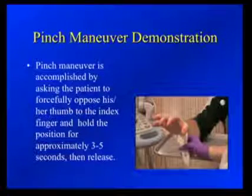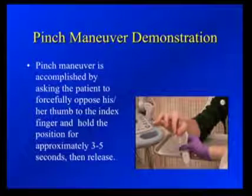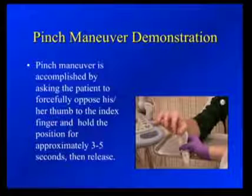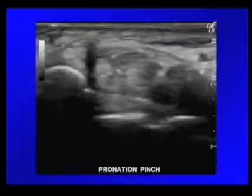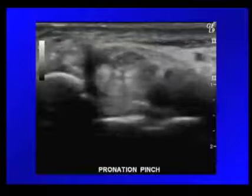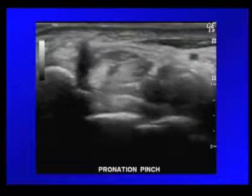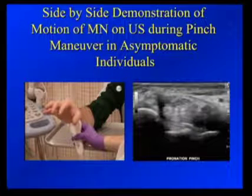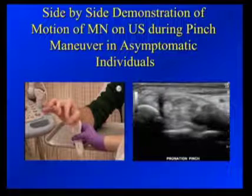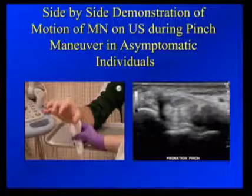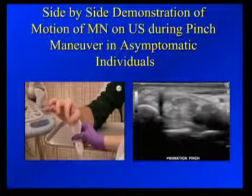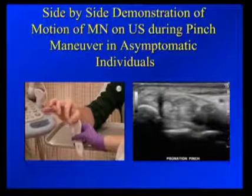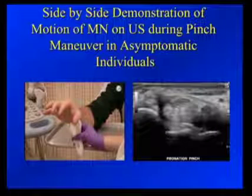Practically, we have the patient hold a fairly tight pinch for three to five seconds during visualization of the median nerve over the carpal tunnel. On ultrasound, you can observe some movement of the median nerve during pinching, but there is no entrapment within the carpal tunnel. A side-by-side comparison of the pinch maneuver in an asymptomatic individual shows that once pinching starts, there is some movement and some flattening of the median nerve, but the nerve is not entrapped — there is no sagittal movement with this maneuver.